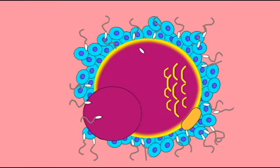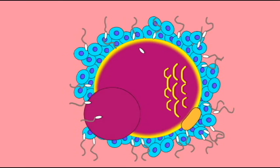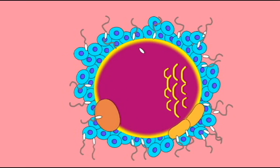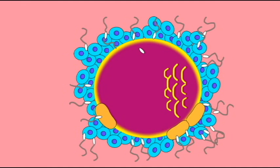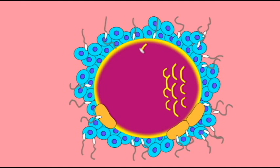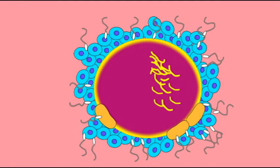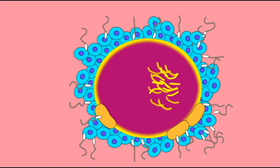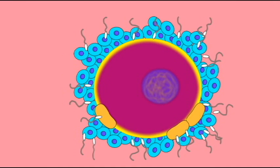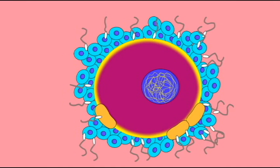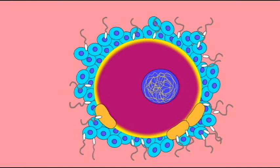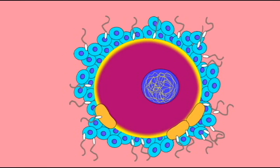These vesicles then inactivate proteins around the secondary oocyte, such as Zp3, which prevents additional sperm from penetrating the ova, thus preventing polyspermy.